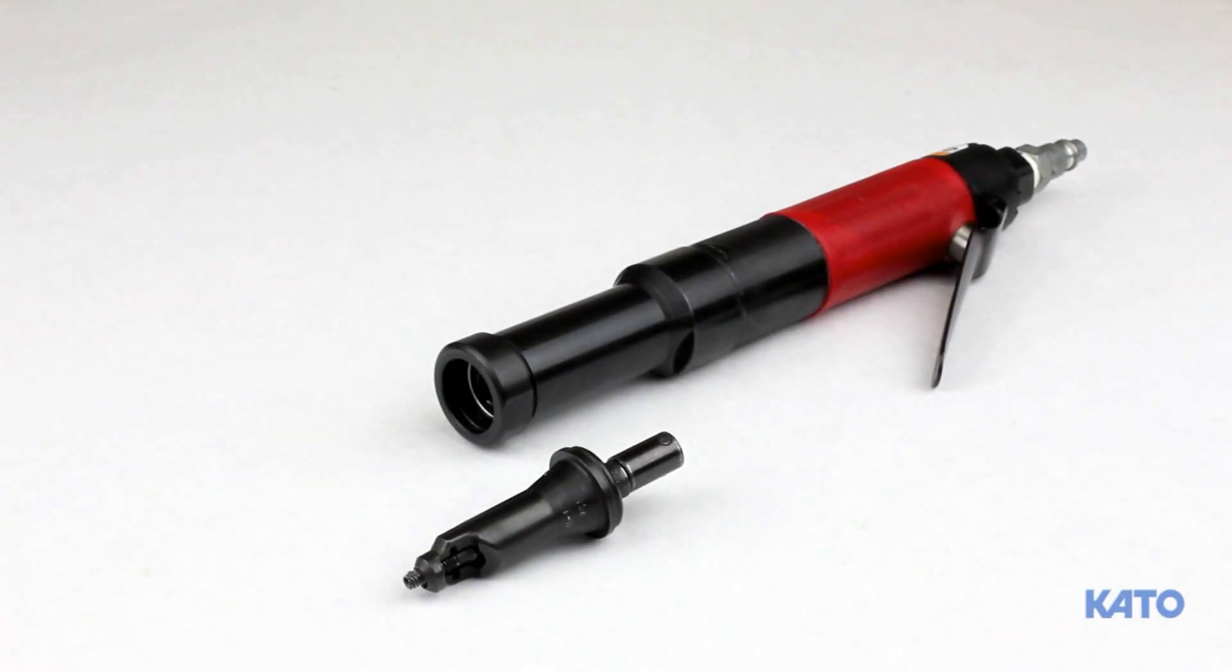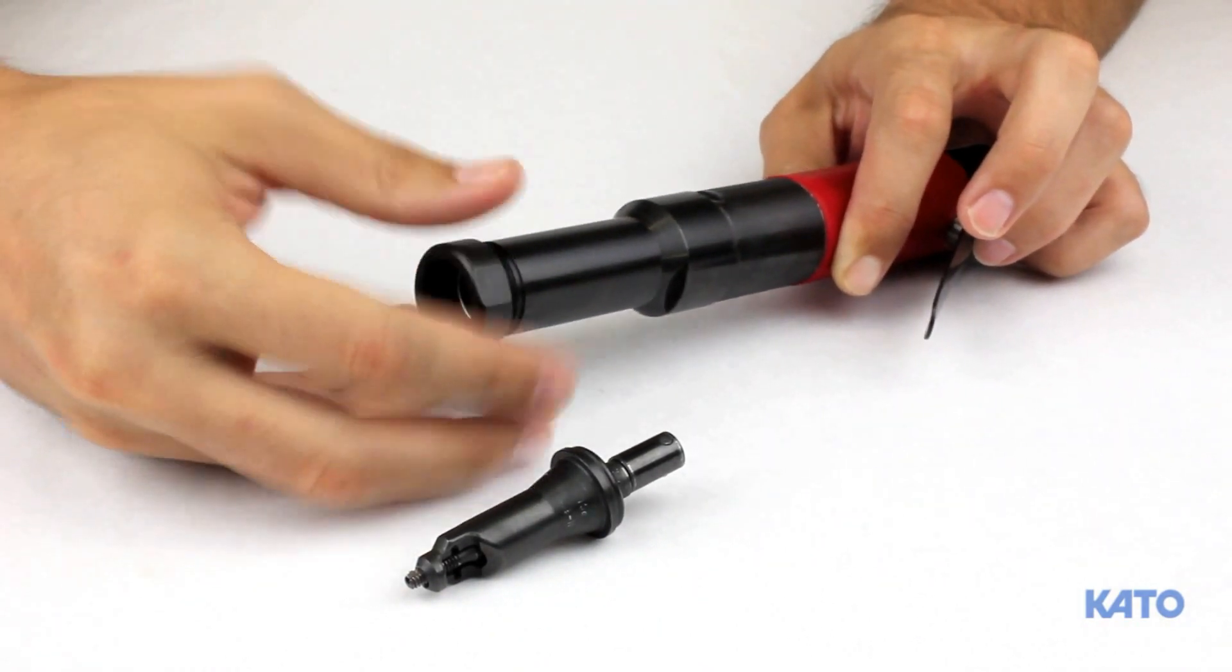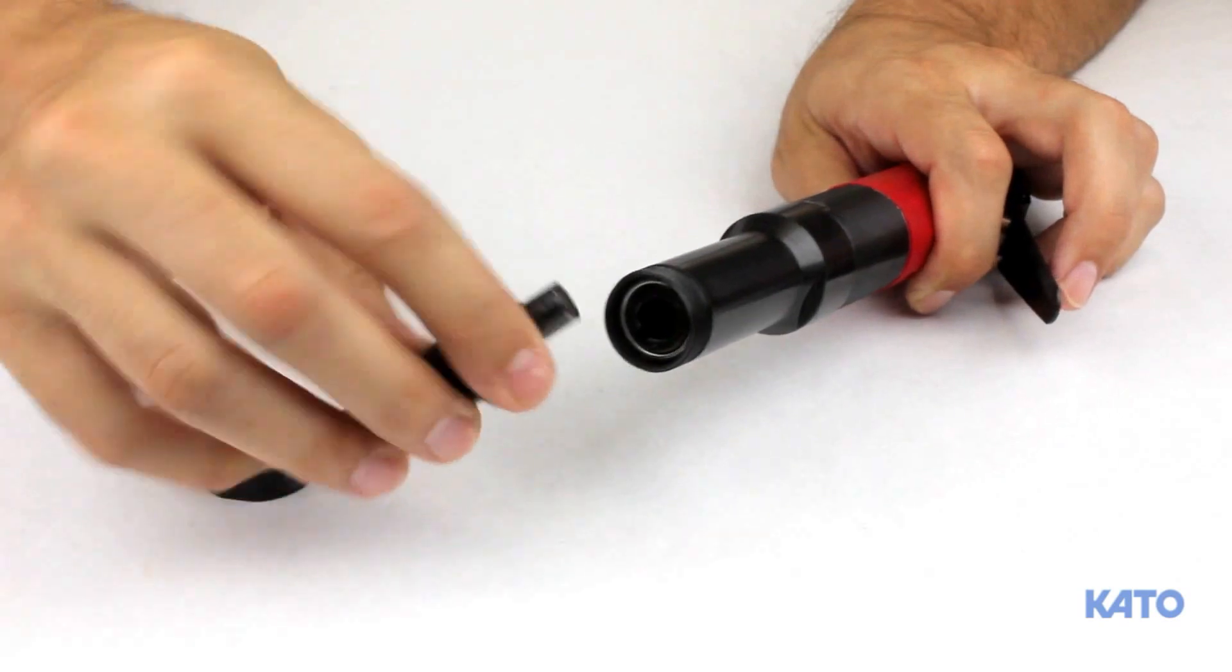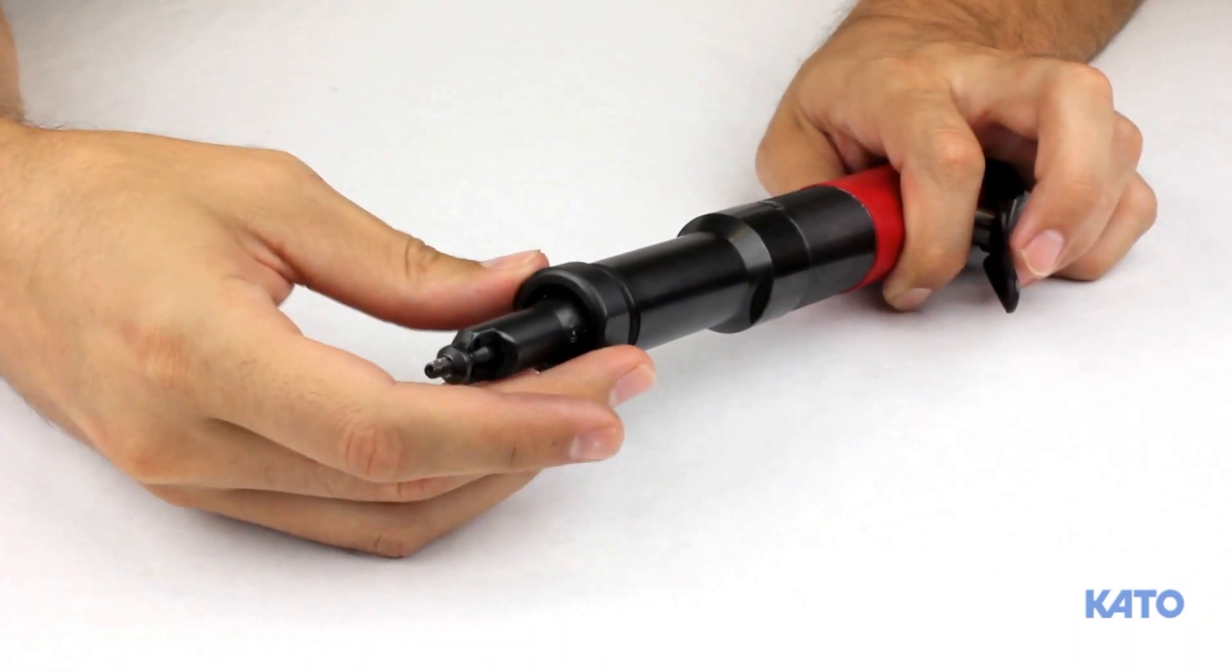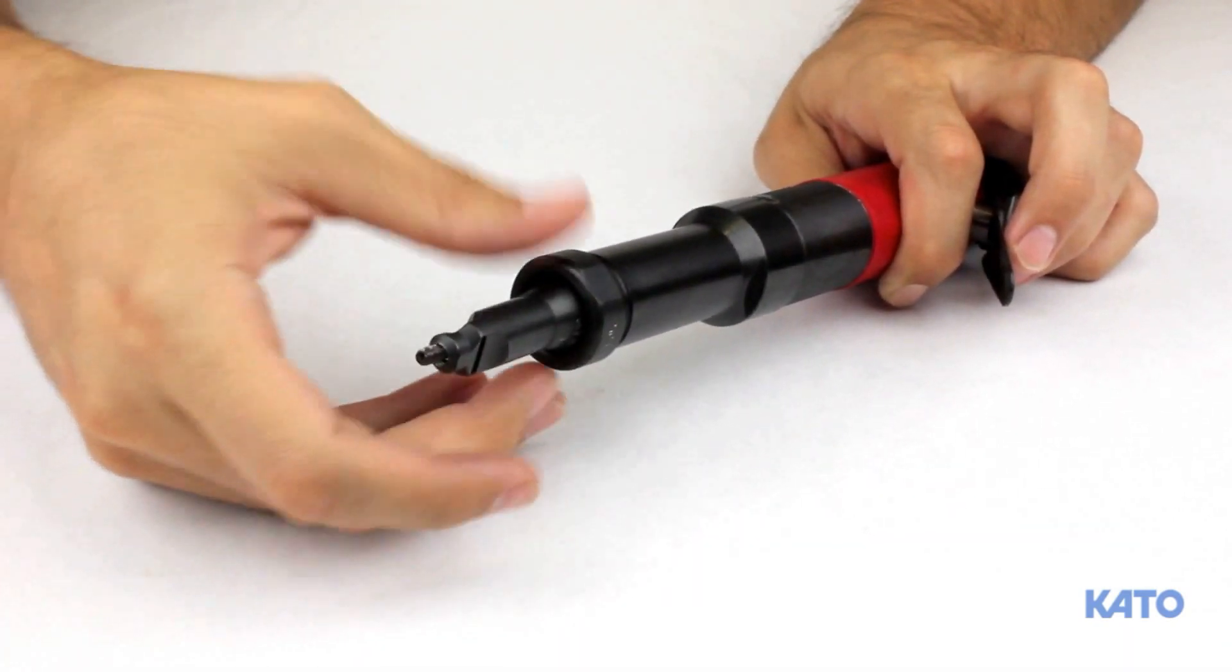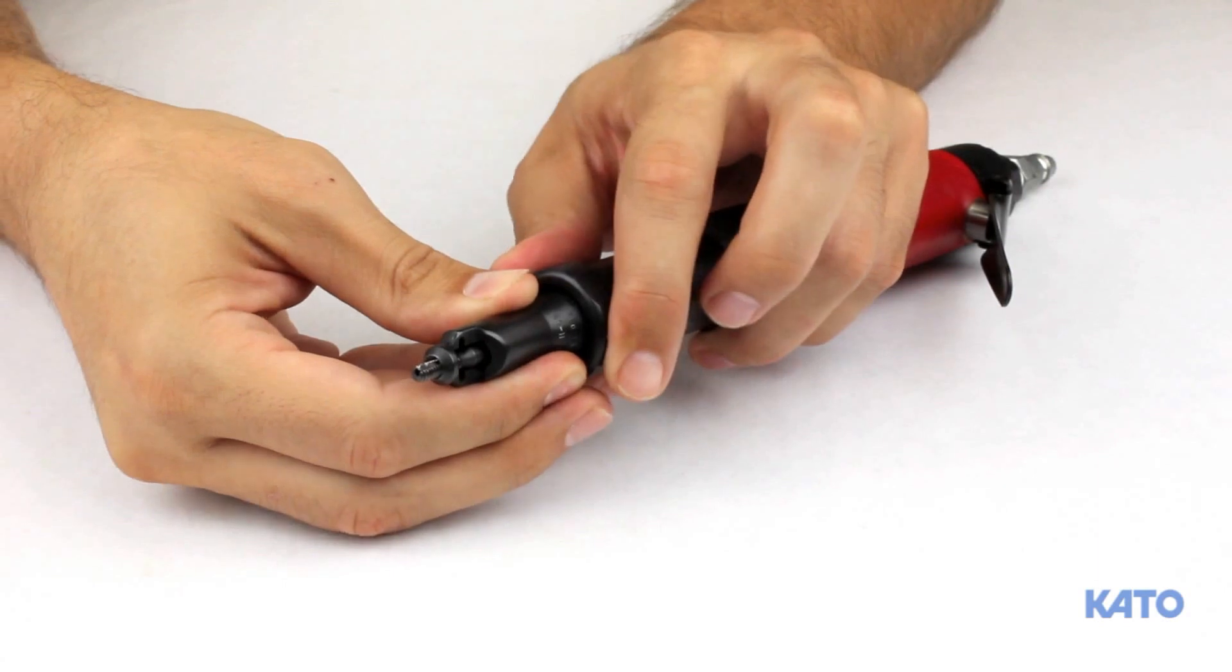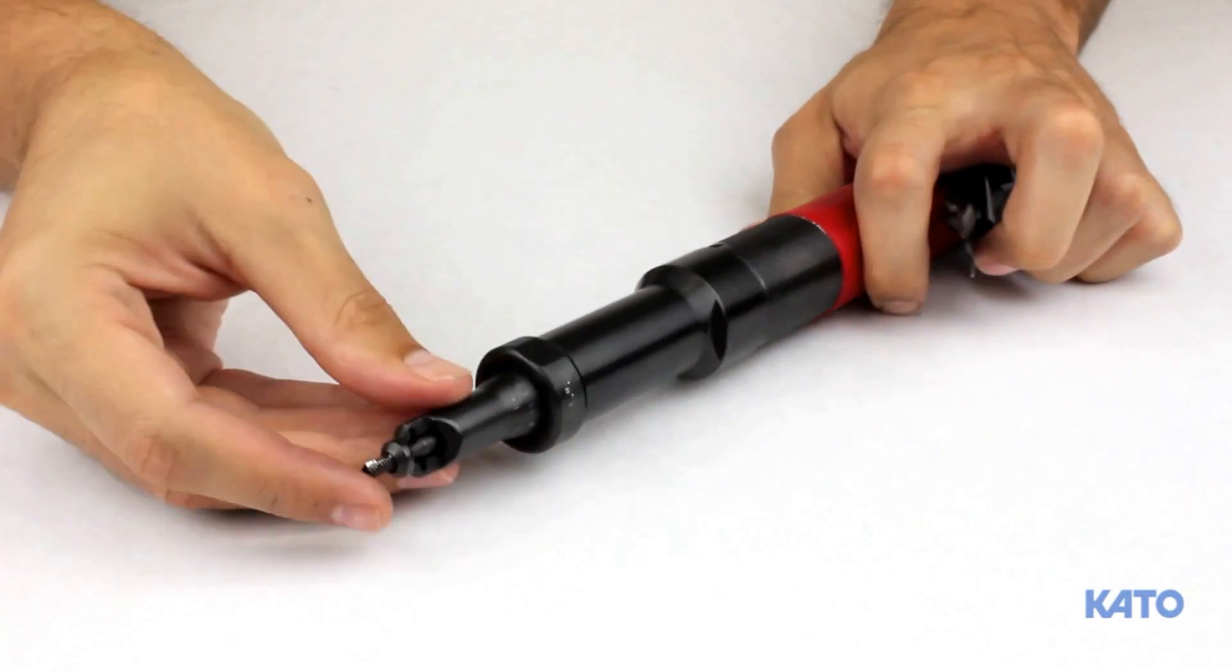To connect the front end assembly, remove the lock nut from the end of the adapter. Remember the threads are left handed, so turn clockwise. The slot in the drive shaft is keyed and matches the end of the mandrel. Align the keyed slot with the mandrel and slide the mandrel into the drive shaft. Place the lock nut over the front end assembly and tighten by turning counter clockwise. Before fully tightening the lock nut, rotate the front end assembly so that it is positioned for operator comfort and preference. Once again, a good hand tightening is all that is needed. Do not over tighten.